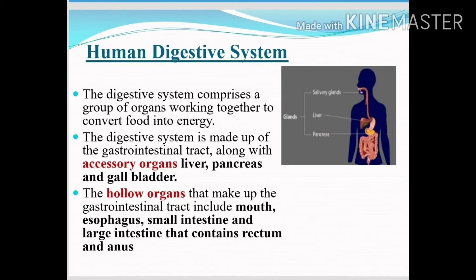The human digestive system comprises a group of organs that work together to convert food into energy. It is made up of the gastrointestinal tract along with some accessory organs. Accessory organs are the liver, pancreas, and gallbladder. The hollow organs that make up the gastrointestinal tract, or alimentary canal, include the mouth or buccal cavity, esophagus, small intestine, and large intestine, which contains the rectum and anus.